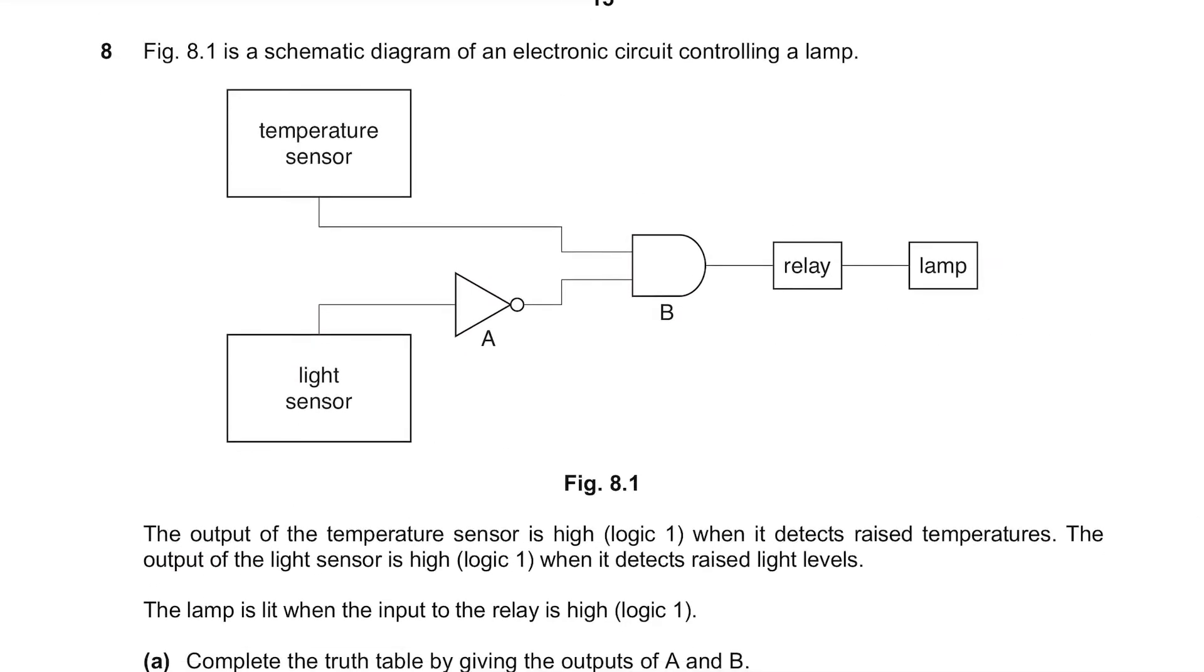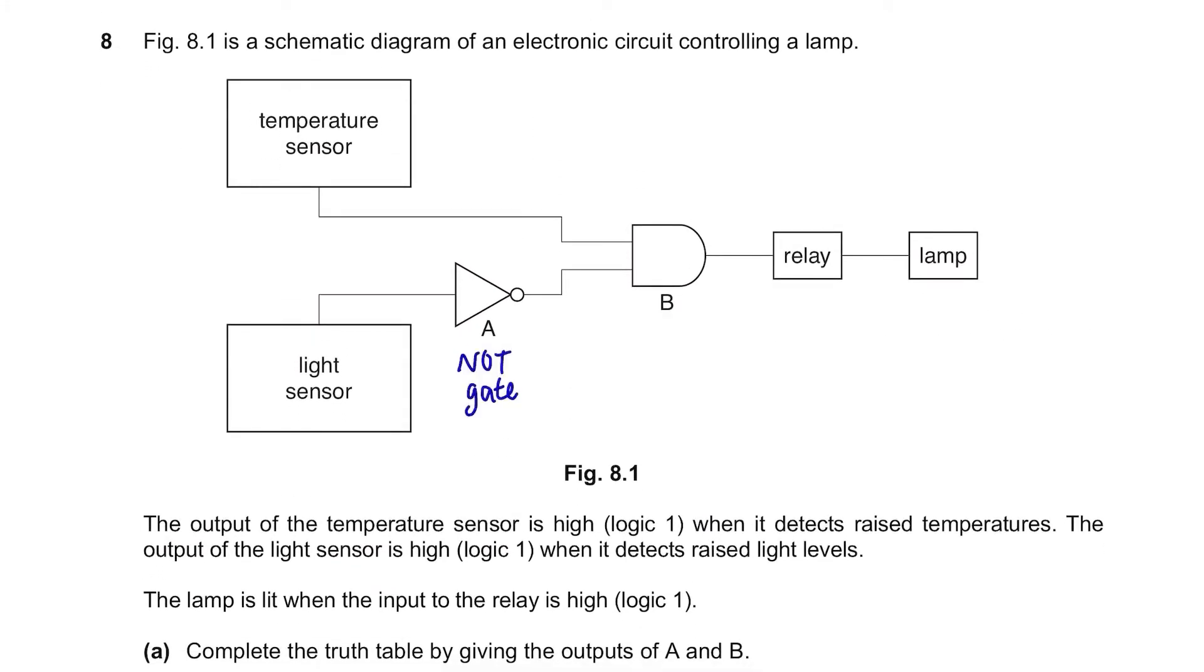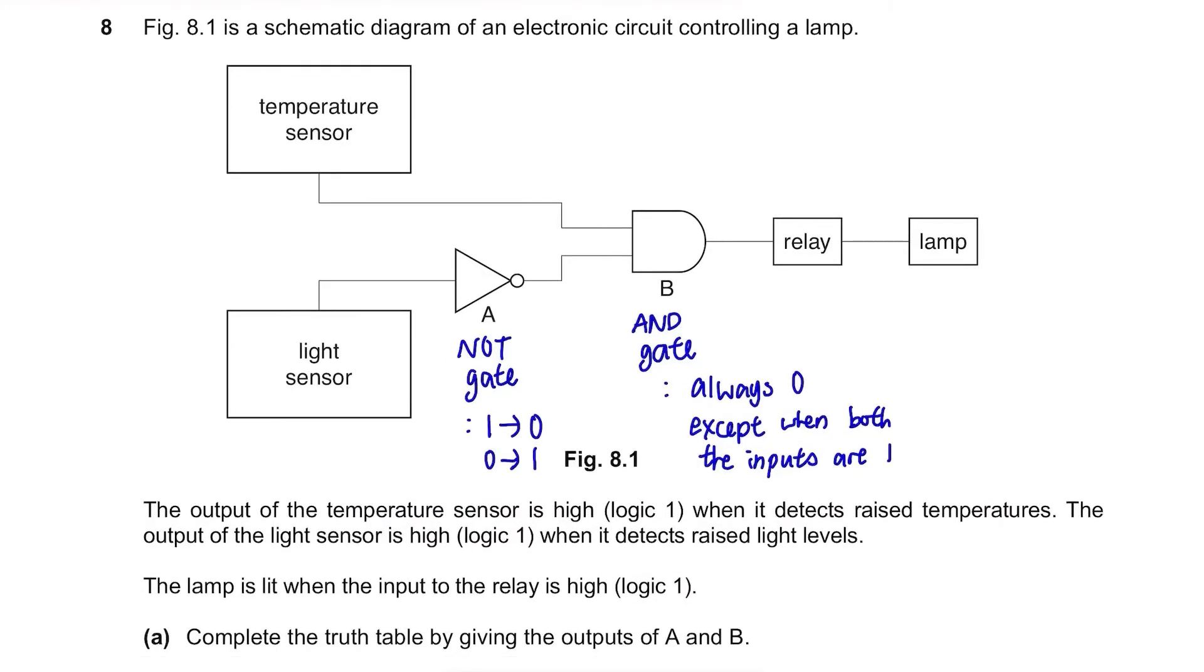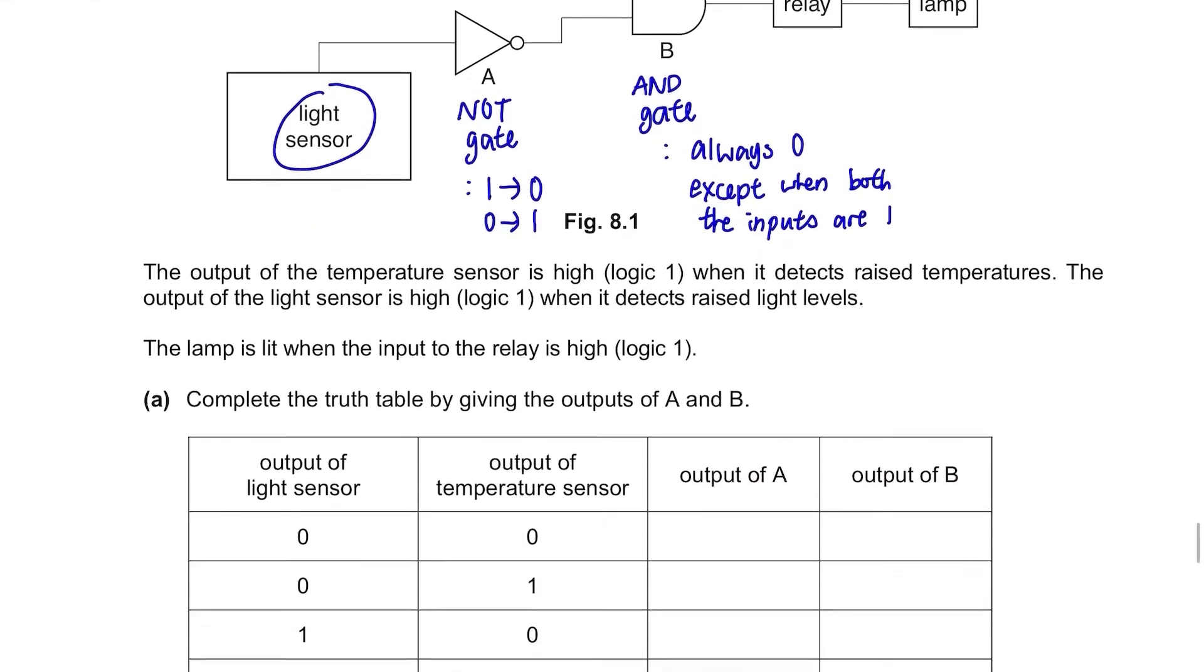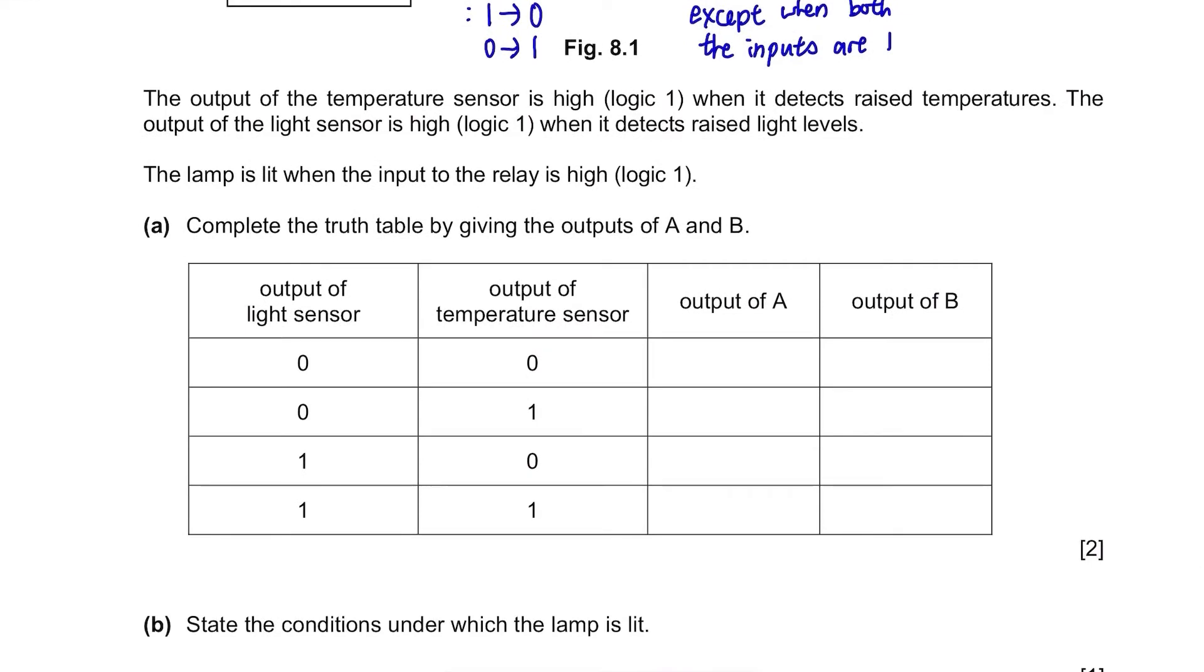We can see that A is the NOT gate and B is the AND gate. NOT gate will give opposite of the input, so if the input is 1, it will be 0 and vice versa. AND gate will give you 0 unless both the output is 1. A is connected only to the light sensor. Let's fill in the blanks for output of A first. We just need to write the opposite of these numbers as it's a NOT gate. They are 1, 1, 0 and 0.